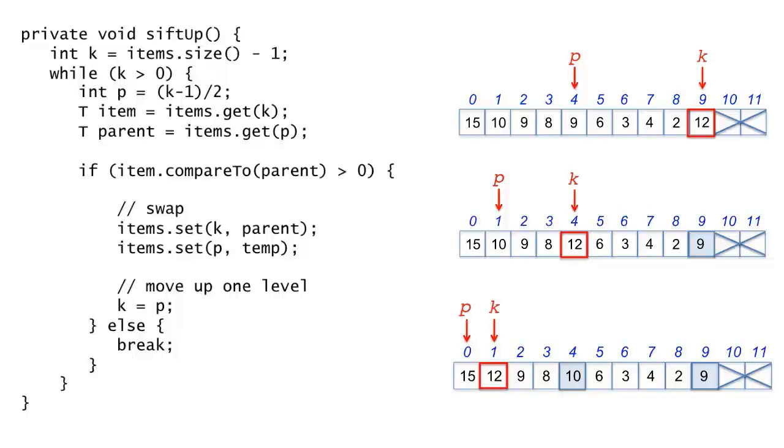In every iteration of the loop, the parent index p is computed, and the items at k and p are compared. The if statement checks whether the k item is greater than the p item. If so, the items are swapped, and k is bumped up to the next level, in preparation for the next iteration. If not, the break statement exits the loop. That's it for sift-up.